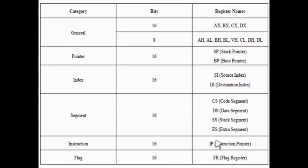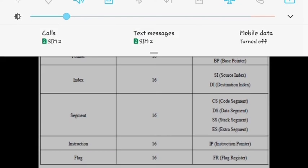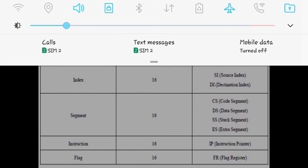Next, instruction pointer. To access instructions, the 8086 uses the registers code segment and IP. The code segment register contains the segment number of the next instruction and the IP contains the offset. IP is updated each time an instruction is executed so that it will point to the next instruction.